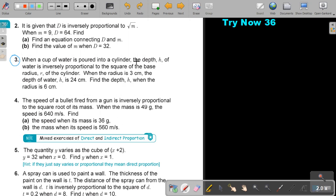When a cup of water is poured in a cylinder, the depth H of the water is inversely proportional to the square of the base radius R of the cylinder. When the radius is 3, the depth of the water is 24. Find the depth when the radius is 6. So it's indirect. We're going to say H, the depth of the water is inversely, but keep the proportional sign. Inversely, you say 1 to the square of the base radius, so you're just going to say R square.